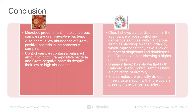Conclusions: Microbes predominant in the cancerous samples are gram-negative bacteria, and there is a low abundance of gram-positive bacteria in the same. Control samples, on the other hand, contain a balanced amount of both gram-positive and gram-negative bacteria. Chao1 shows a clear distinction in abundance between control and cancerous samples, with cancerous samples showing lower abundance. The Shannon index shows that both datasets have a high range of diversity, and the ordination plot shows that samples are divided into three clusters, with more outliers present in the cancerous samples.